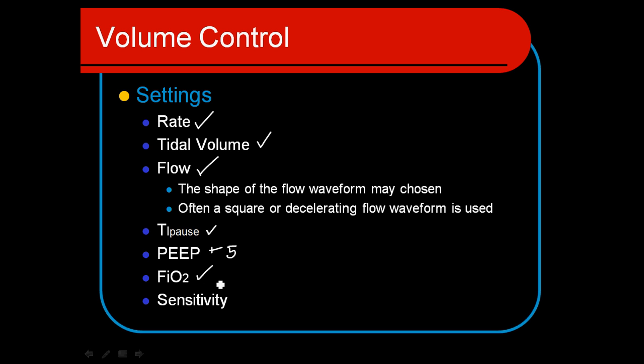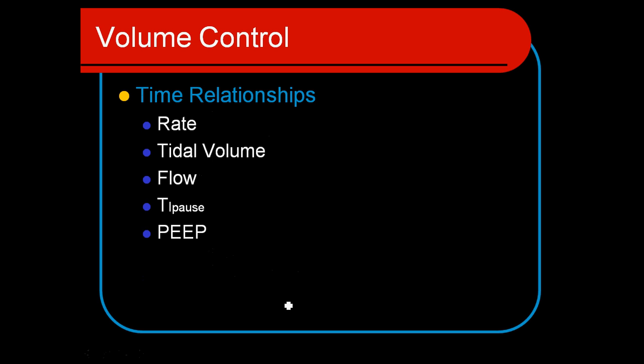We set an FiO2, and if we don't know anything about our patients and we're very concerned about their oxygen saturations, we may initially set this at one. Often, if we think the patient is reasonably stable, we might set it at something like 0.6 and then vary it depending on their needs from their pulse oximeter. We'll always set the sensitivity correctly.